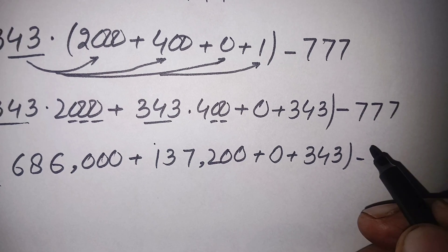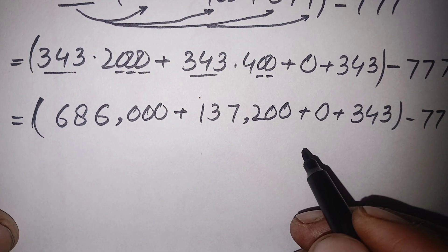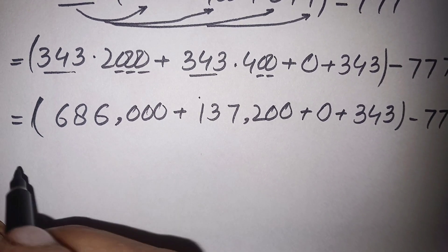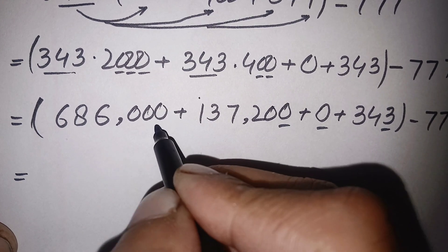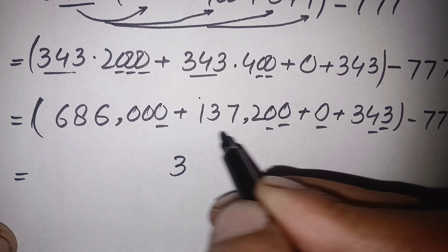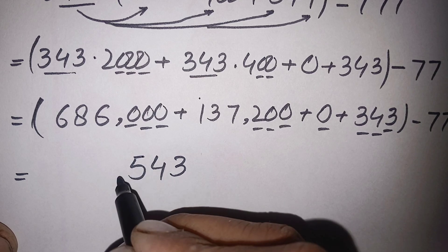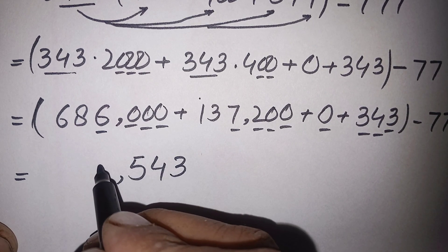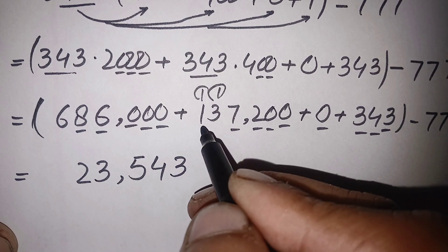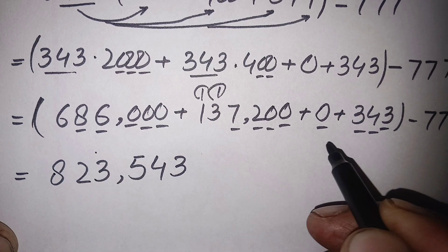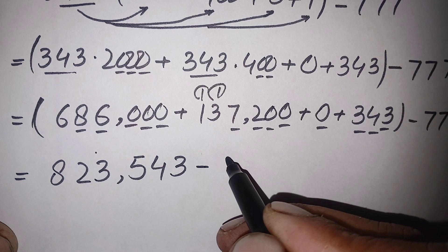Now we add these four numbers: 686000 + 137200 + 0 + 343. Starting from the ones position: 3 plus 0 is 3; 4 plus 0 is 4; 3 plus 2 is 5; in the thousands, 7 plus 6 is 13, write 3 carry 1; 8 plus 1 plus 1 is... combining all digits gives us 823543. So the addition of these four numbers is 823,543, and we still need to subtract 777.